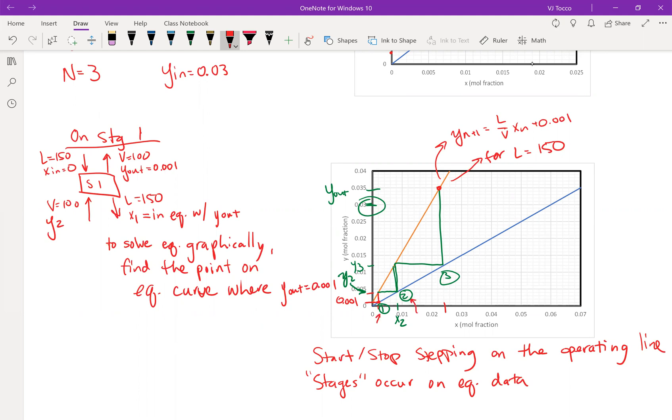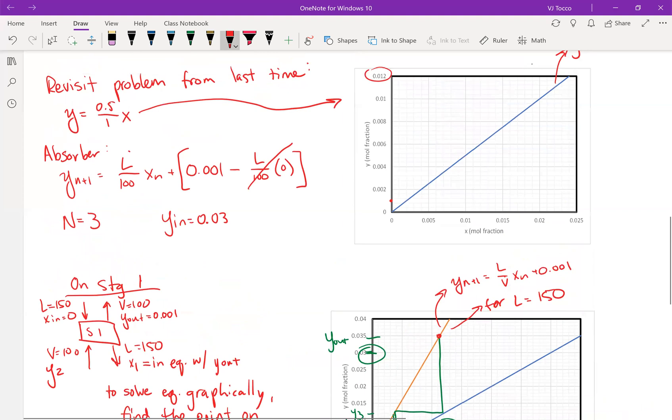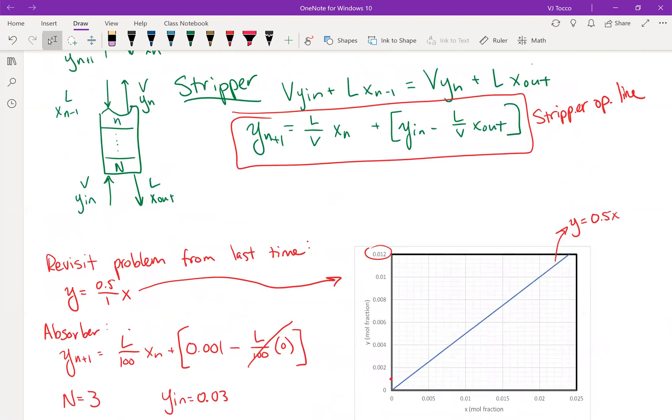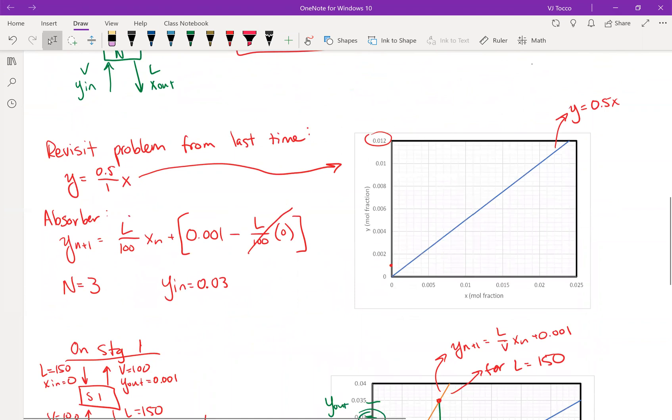And that's what I've shown above. So stage one, stage two, and stage three. Okay, so that's all for this video about graphical absorption stripping processes. Stripping, by the way, is the exact same, just with a different formula for the operating line, but it follows the same exact stage stepping procedure.